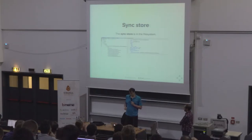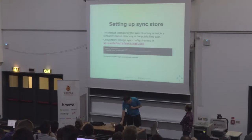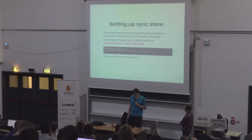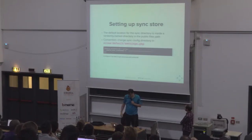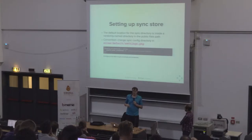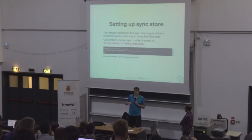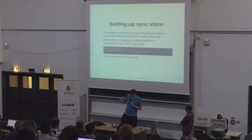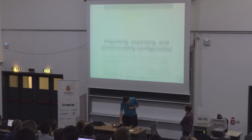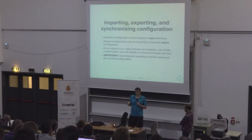The sync store is in files and has essentially the same structure. Setting up the sync store is done in settings.php using a variable, and the best practice is to keep it outside of the web root and in your version control. By default, Drupal can only write to the sites default files directory, so it will try to create a folder there with a very long random name. When you export configuration, it gets stored in the sync directory, and both the UI and Drush can tell you the differences.